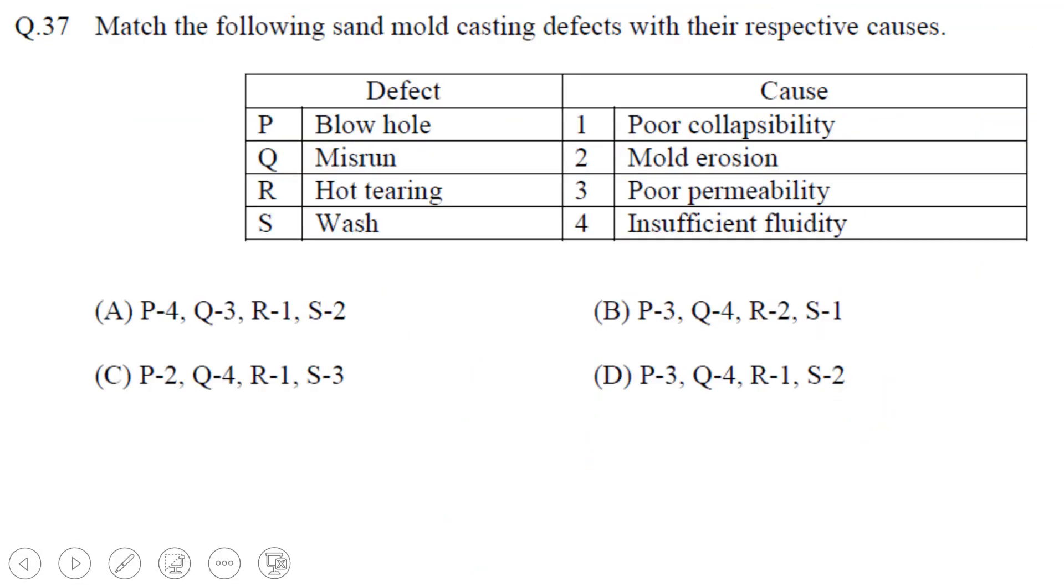Next question: Match the following sand mold casting defects with their respective causes. So what is the cause of that defect? See, the first defect is blowhole, then misrun, then hot tearing, then wash. So blowholes, you know, are observed like some kind of hole will be observed on the top surface. So how do these holes occur? Because when these gases try to escape, basically.